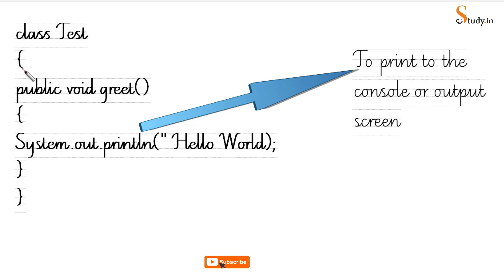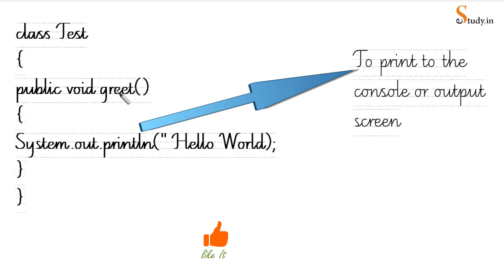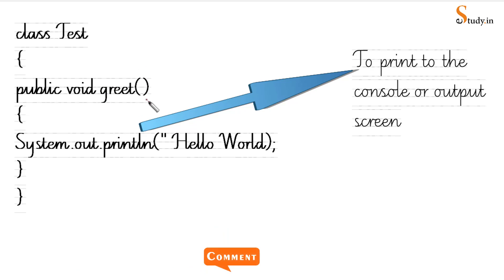After the class name, open the curly brackets. Then write 'public void' followed by a method name — I'm calling it 'greet', but it can be called anything. Then add round parentheses.